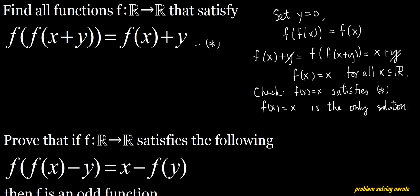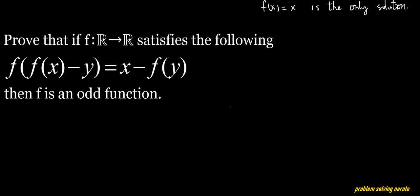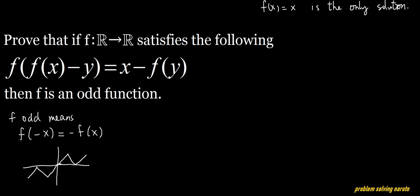Now let's look at the second problem. We want to prove that if f satisfies this equation, then f is an odd function. If you don't know already, odd means f(-x) = -f(x). Let's try to solve this problem.